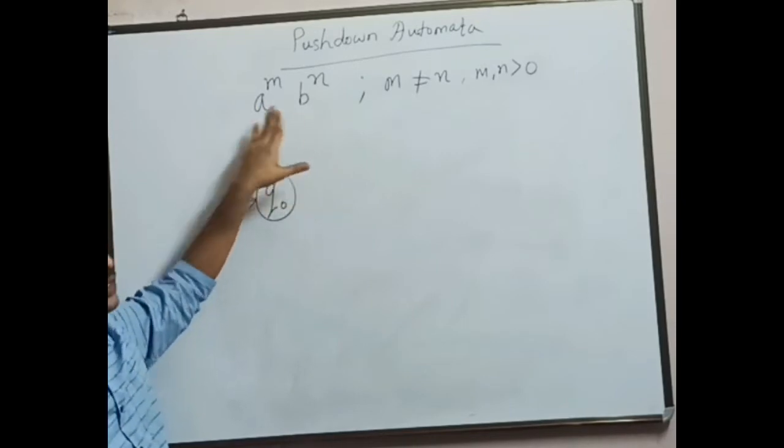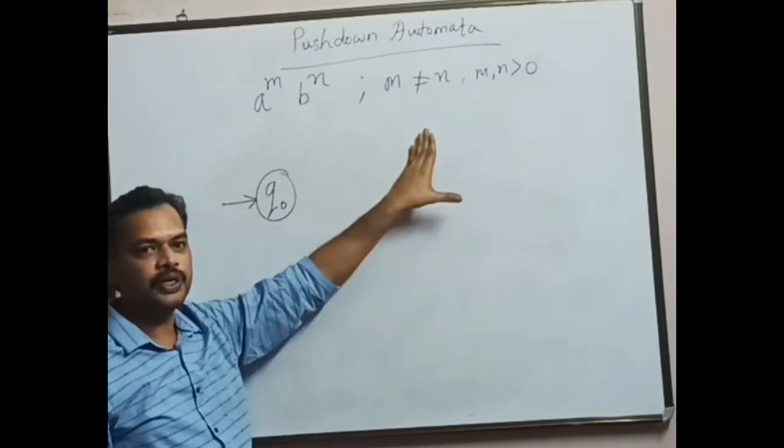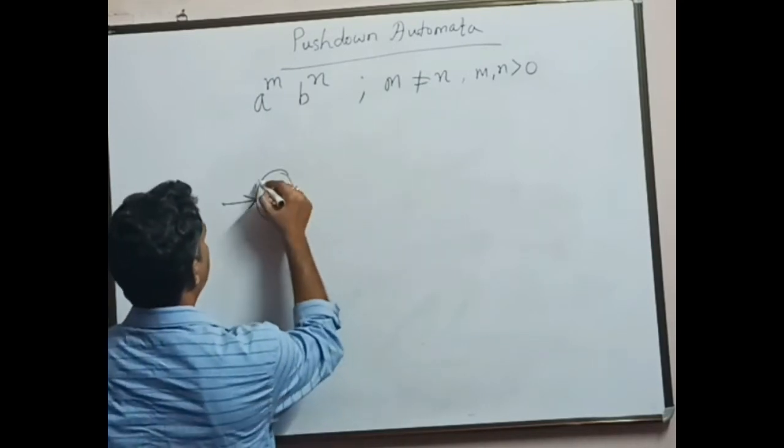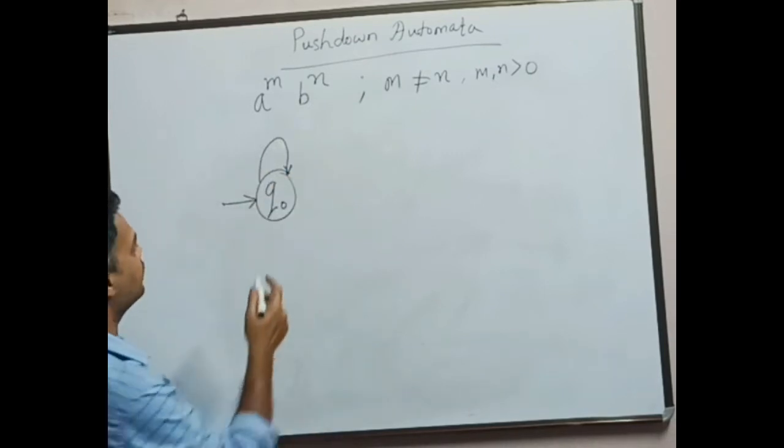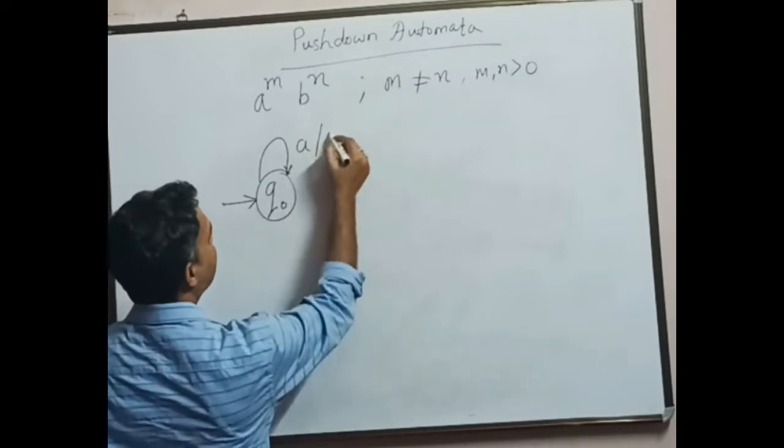That means a should occur first, then any number of b's can occur. As a beginning, we can go in this way: if the PDA comes across character a, let it push it onto the stack.